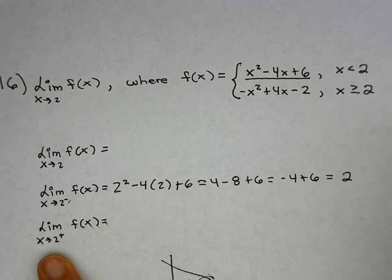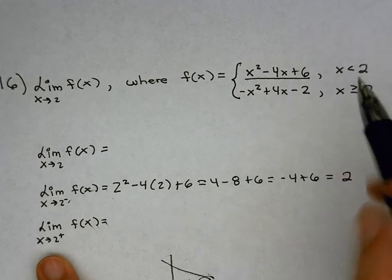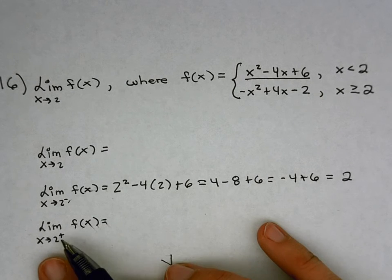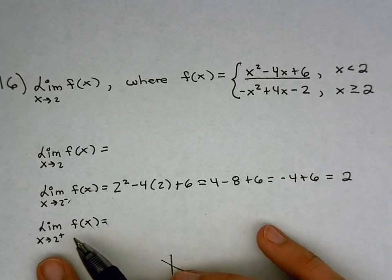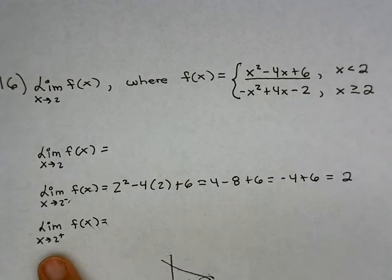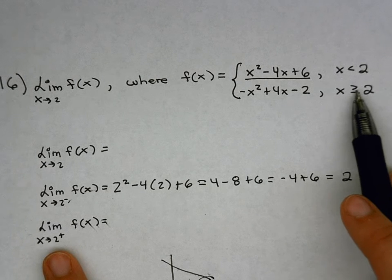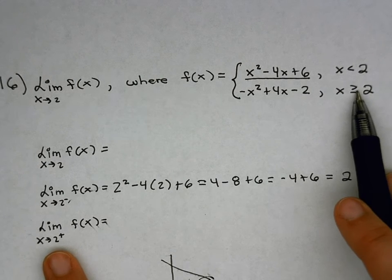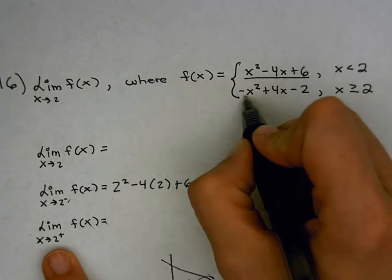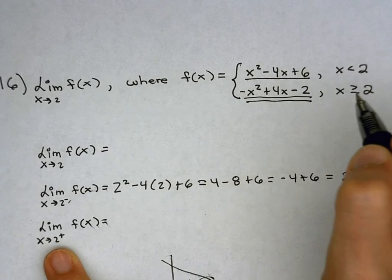Okay, for 2 from the right, those values right of 2 are like 5, 4, 3 coming in from the right to 2. So I need to figure out, well, which one of these are coming in from the right? Well, right of 2, that's this interval, x is greater than or equal to 2. And so this bottom function is what I'm going to use for right of 2.